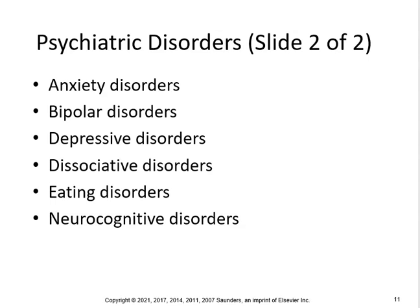Some eating disorders that predominantly affect adolescent females are anorexia and bulimia. Bipolar and depressive disorders include cyclothymic disorder, which is a milder form of bipolar disorder characterized by at least two years of hypomania and numerous depressive episodes.